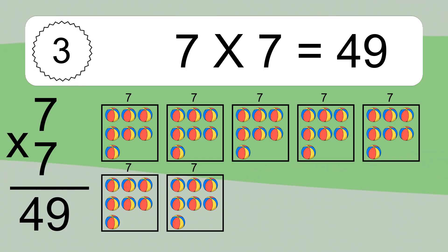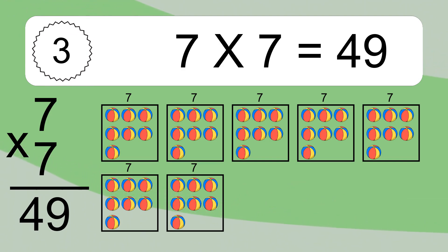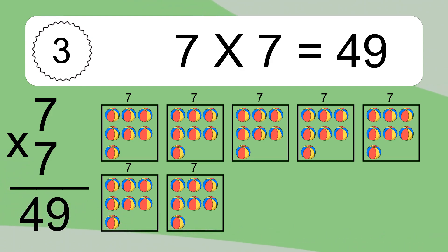We have 7 boxes, and each box has 7 colorful balls inside. If you count all the balls in all the boxes together, you will have 7 times 7 balls. This equals 49 balls.